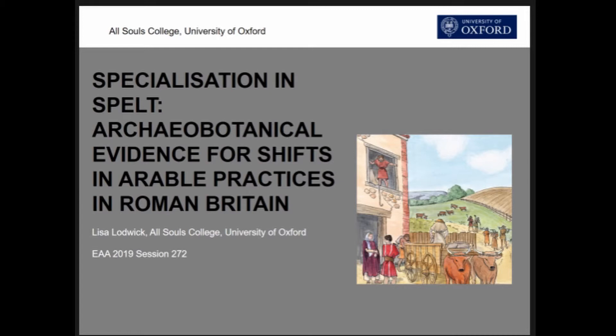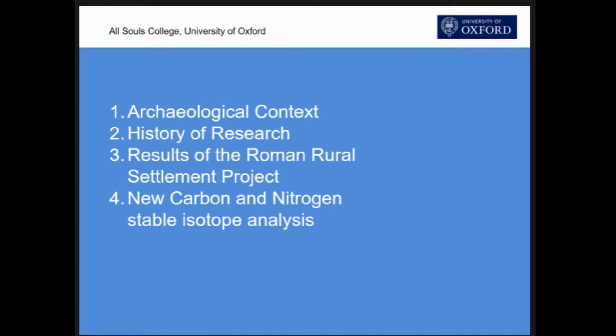Today I'm going to talk about crop production, where in Britain we're mainly talking about spelt wheat, and discuss the results of a big synthesis project and then some more recent data using isotope approaches to look at cultivation practices in more detail. I'll give a quick bit of archaeological context, where Britain is, a history of archaeobotanical research, and then those synthesis and isotopic results.